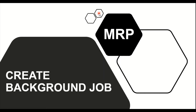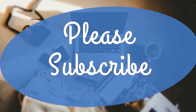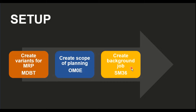Welcome back. In this video we'll discuss the creation of a background job for MRP. Before we log into SAP, let's look at the prerequisites. The first step is to create the variant for MRP in transaction MDBT. The second step is to create the scope of planning in transaction OM0E. Then we create the background job in transaction SM36.